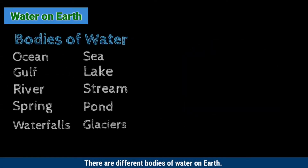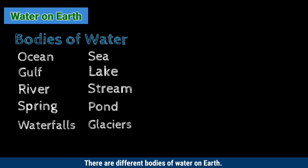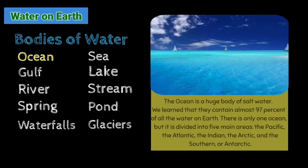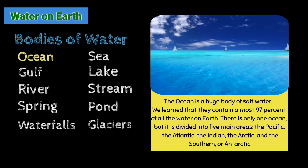There are different bodies of water on Earth. The ocean is a huge body of salt water, containing almost 97% of all the water on Earth. There is only one ocean, but it's divided into 5 main areas: the Pacific, the Atlantic, the Indian, the Arctic, and the Southern, or Antarctic.